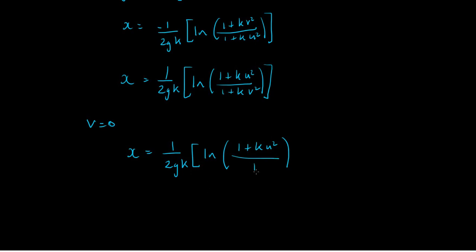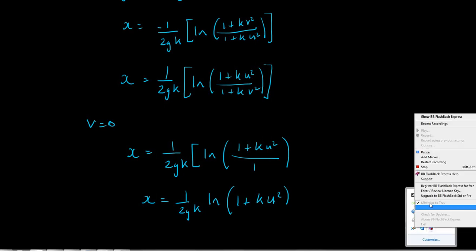So the final answer is just x is equal to 1 over 2gk, the natural logarithm of 1 plus ku squared, and that is our maximum height obtained during this motion. Thank you for watching the video. I look forward to seeing you next time.